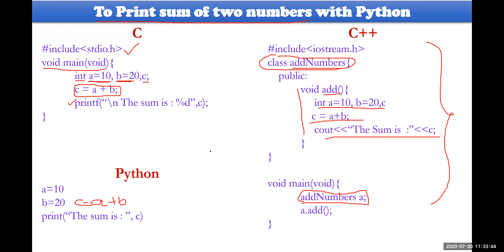I have shown you two examples: one is printing Hello World, and the second is addition of two numbers. In C and C++, you have to import or include something, initiate a function or a class, create an object, and call the function. Whereas in Python it is like a mathematical feature — take value of a, take value of b, add those and print them. That is why Python is a pretty much simple language to learn.